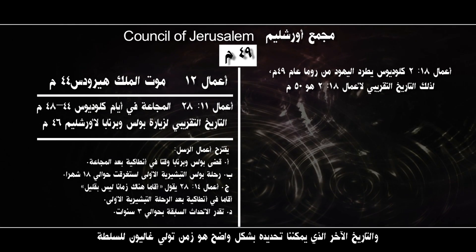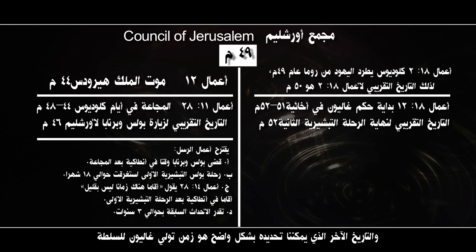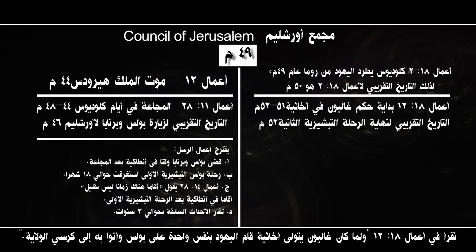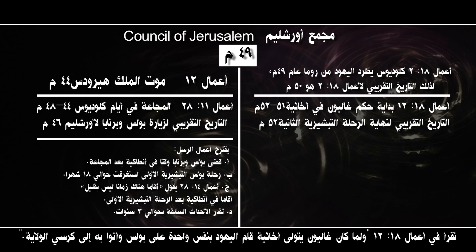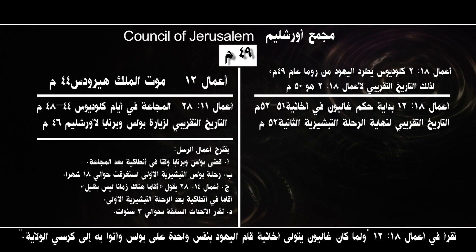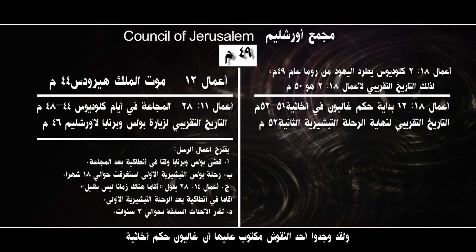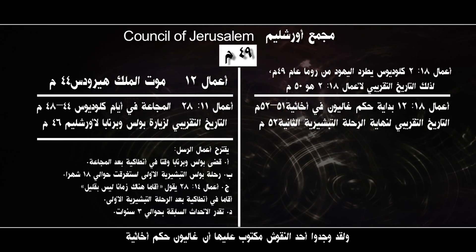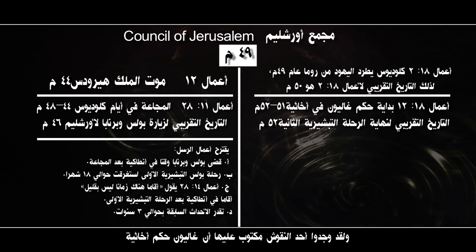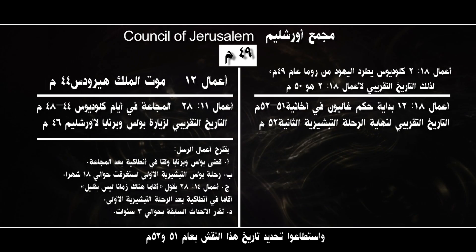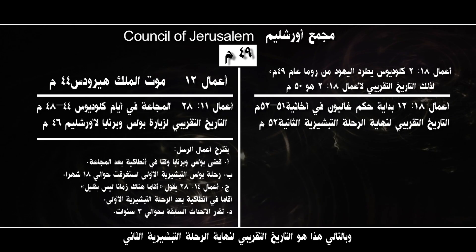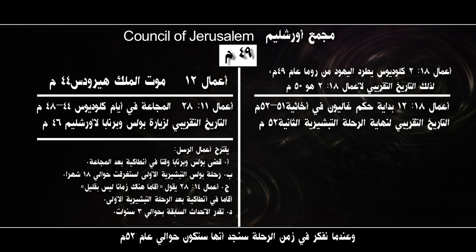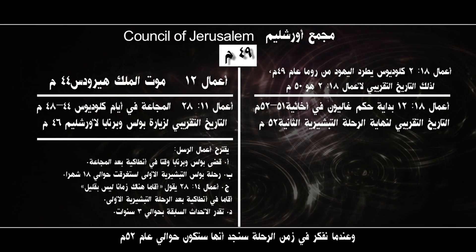Another date that we can identify very specifically was the proconsulship of Galio. In Acts 18, verse 12, we read: 'But when Galio was proconsul of Achaia, the Jews made a united attack on Paul and brought him before the tribunal.' There is an inscription that was found stating that Galio was proconsul of Achaia, and we're able to date that to AD 51 to 52. And so the approximate date for the end of the second missionary journey, considering the journey time and these dates, would be about AD 52.